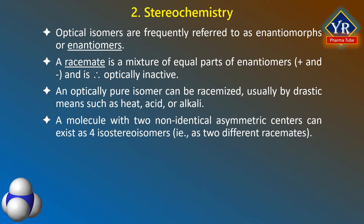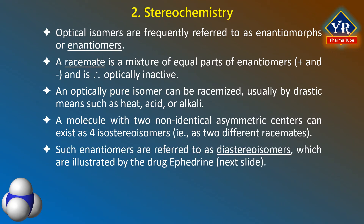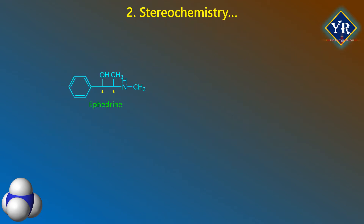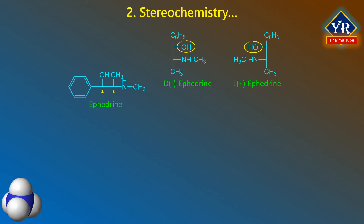A molecule with two non-identical asymmetric centers can exist as four stereoisomers as per the 2^n formula — that is, as two different racemates. Enantiomers from either of the racemates cannot exist in a mirror image relationship with each other; such enantiomers are referred to as diastereomers, which are stereoisomeric compounds that are not mirror images of one another, illustrated by the drug ephedrine. Dextroephedrine and levoephedrine are mirror images of each other, yet not superimposable — they are enantiomers, and when mixed in equimolar proportions form a racemate, also known as racephedrine.